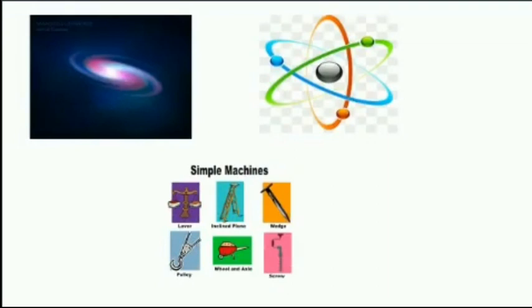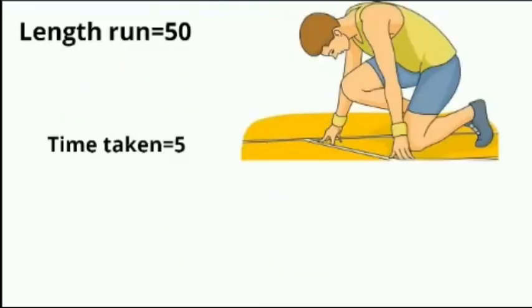Physics is a quantitative science based on measurement of physical quantities. Certain physical quantities have been chosen as fundamental or base quantities. For example, in a marathon run, if we say the player ran 50 and time taken is 5, we don't understand the meaning of 50 or 5 — we don't know how much distance was covered or time taken.